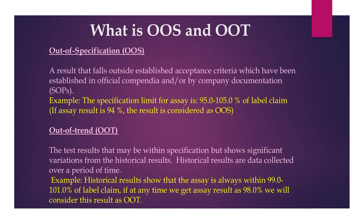What is OOS and what is OOT? OOS is out of specification — a result that falls outside established acceptance criteria which have been established in official compendia or by company documents like an SOP. For example, the specification limit for SE is 95 to 105 percent of the label claim. If the SE result is 94 percent, the result is considered OOS, out of specification.